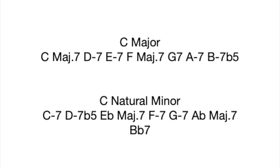What would happen though if we were to borrow chords from the C natural minor or Aeolian scale? This would give us chords such as E flat major 7, A flat major 7, and B flat dominant 7. By utilizing both the C major and C minor chord families, we are able to expand our harmonic palette and create all sorts of interesting chord progressions.